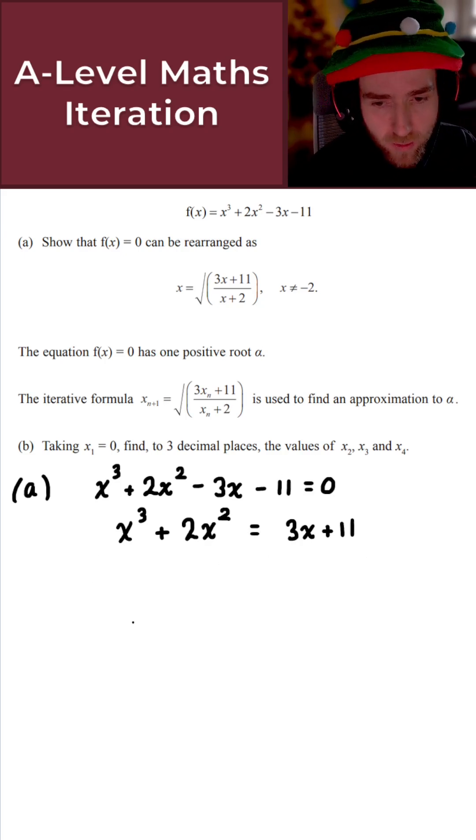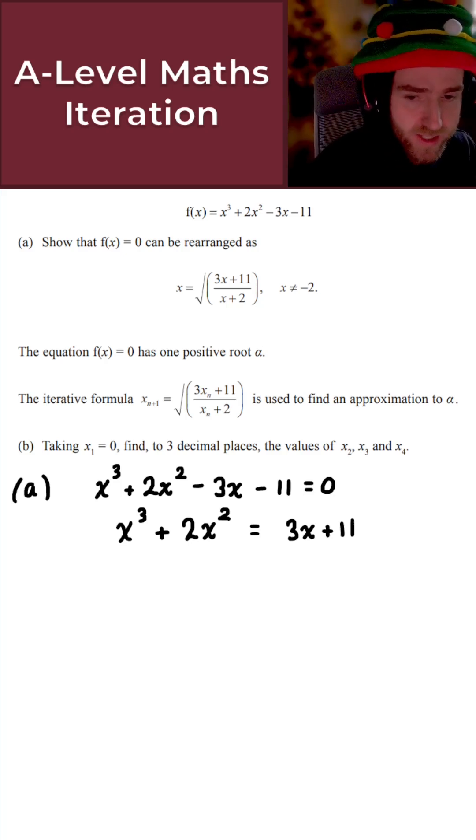Now at this point, what I'm going to do is just factor out an x squared here because what I can see by looking at the desired result is they take the square root. So let's just factor out an x squared here on the left-hand side.